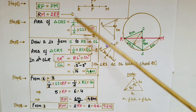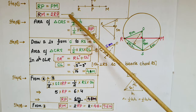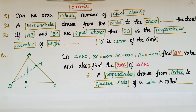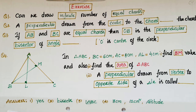From equation 1, RM equals 2RP. So RM equals 2 times 4.8, which equals 9.6 meters. Please do this exercise. Here are the answers.